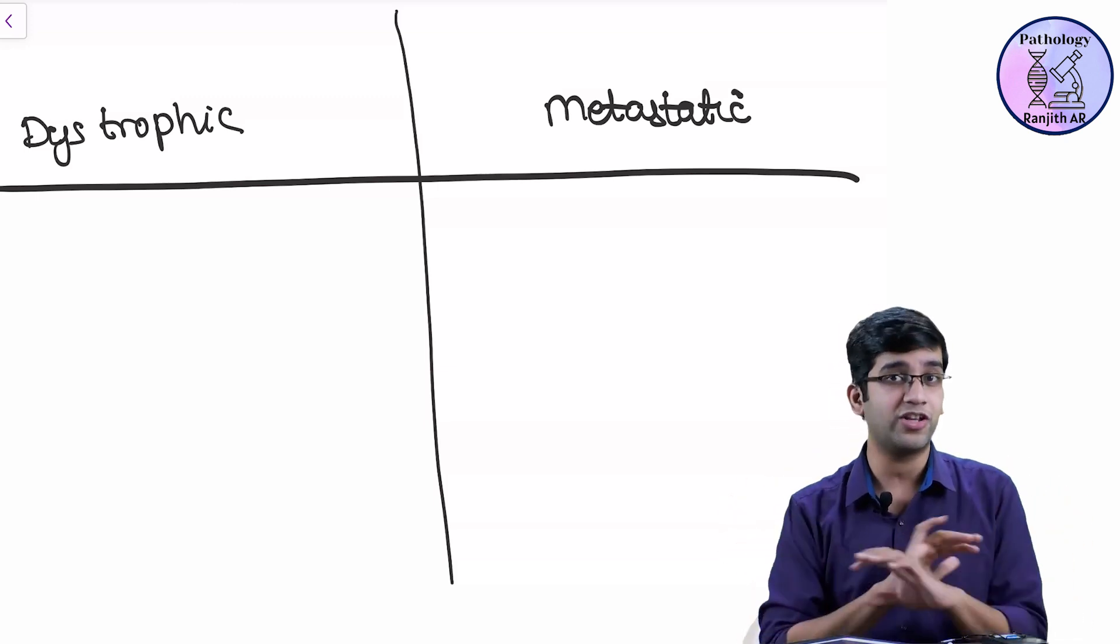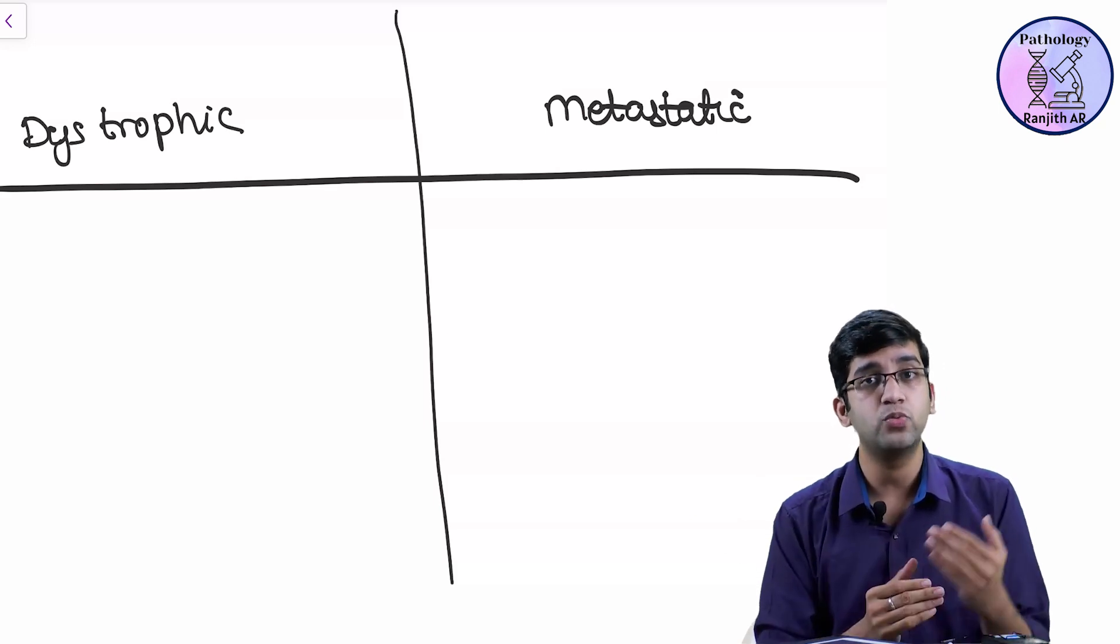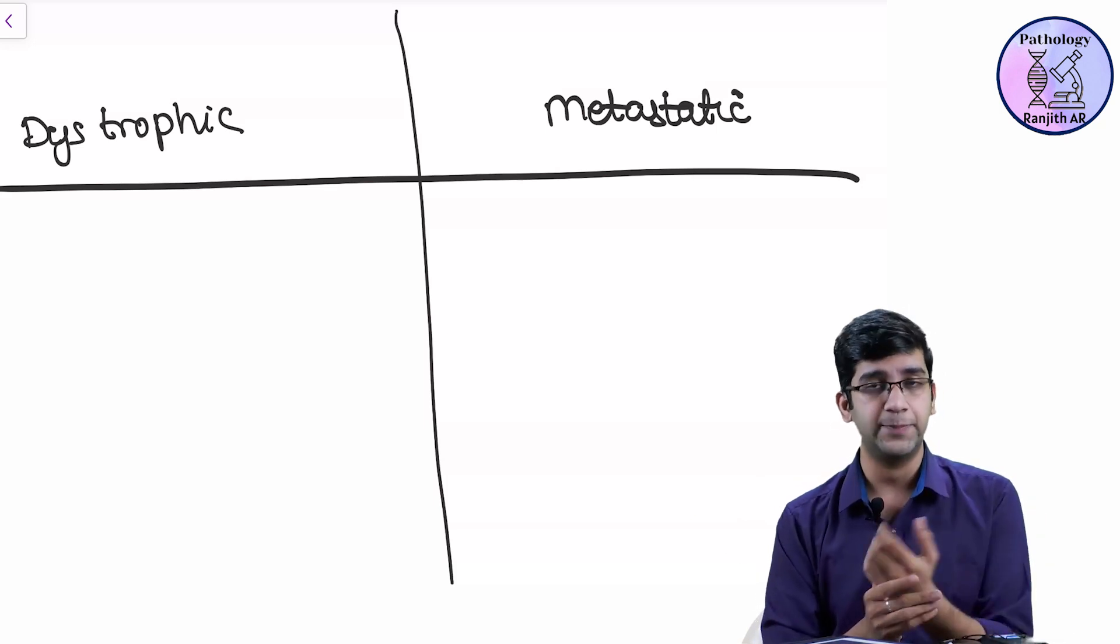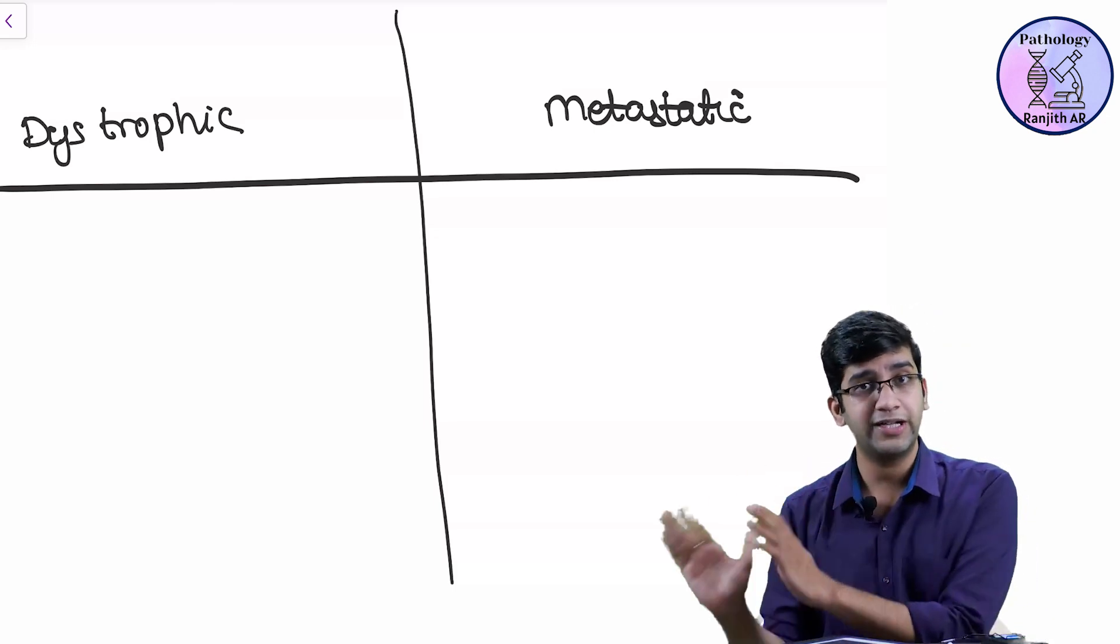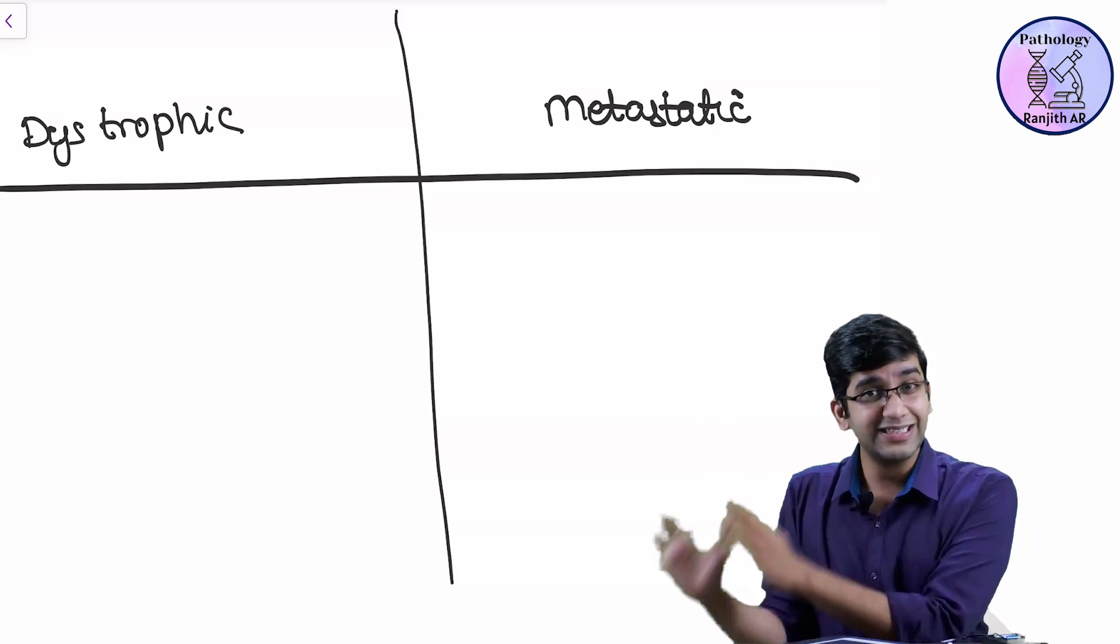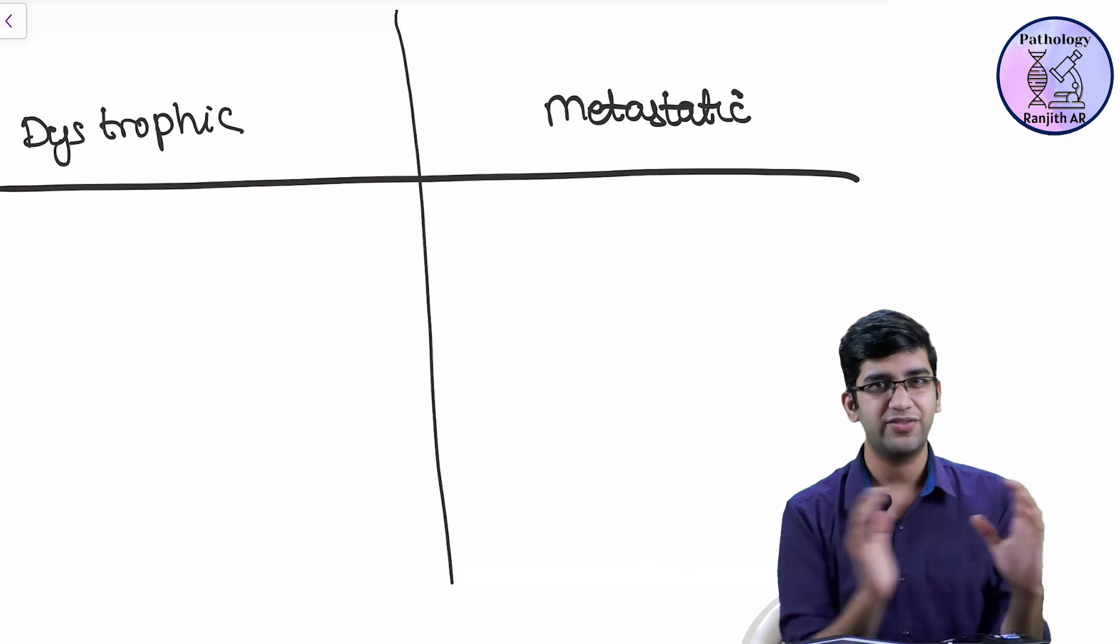I'm just going to extrapolate with your existing knowledge. pH of the organ predisposes to deposition in the GI tract. The entire GI tract - the pH changes favor the calcium deposition, so it's going to get deposited there. That's the entire thing you need to know about metastatic calcification.